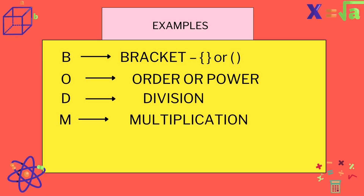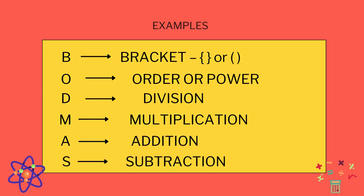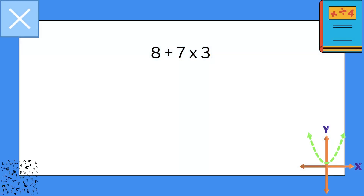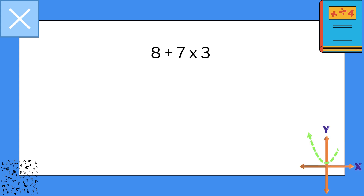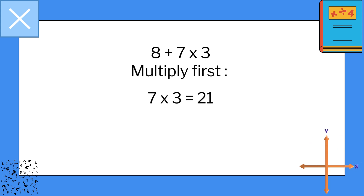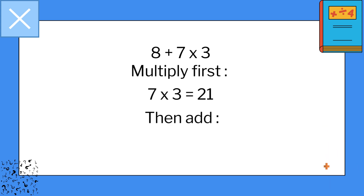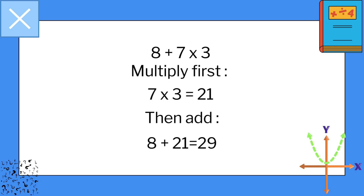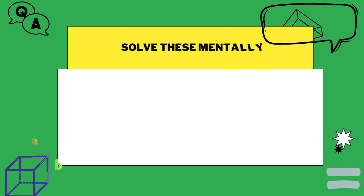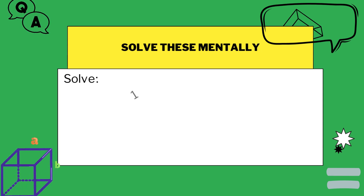In the question 8 plus 7 times 3, there are no brackets — only multiplication and addition. So as per BODMAS rule, we perform multiplication first: 7 times 3 equals 21. Then we add 8 and 21 to get 29, which is the correct answer. Let's have another example: 1 plus 2 times 5 minus 4 divided by 2.